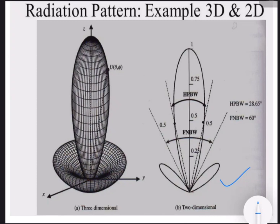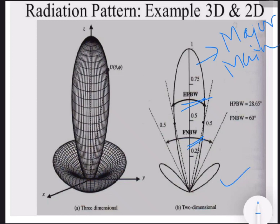In the two-dimensional view, we have the major lobe — also called the main lobe. We also have the half-power beam width (HPBW) and the first null beam width (FNBW). The beam width between the first nulls is called the first null beam width. FNBW stands for first null beam width and HPBW stands for half-power beam width.